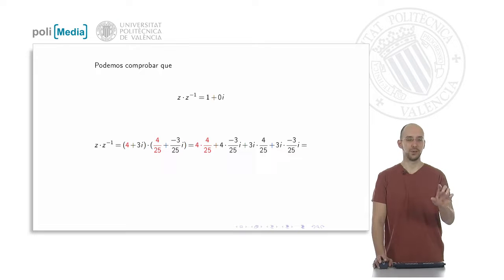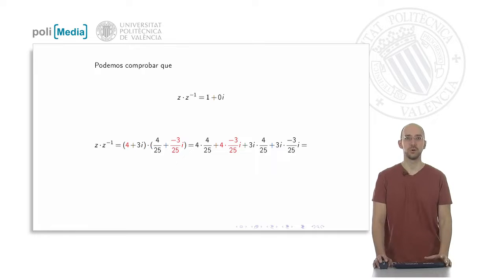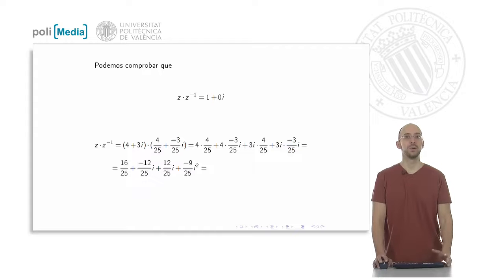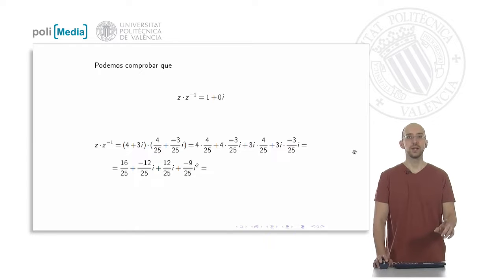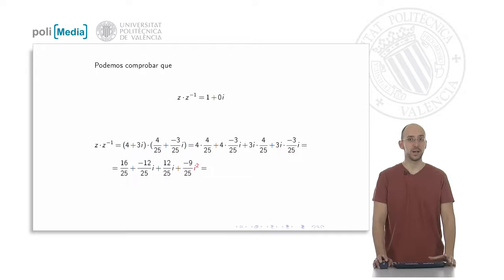Multiplying the real part of the first by the real part of the second: 4 times 4 over 25 gives 16 over 25. Then 4 times minus 3 over 25 times i. Next, 3i times 4 over 25, and finally 3i times minus 3 over 25 i — this last term produces i squared. We then simplify the fractions accordingly, and substituting i squared equals minus 1 changes the sign of the last fraction.